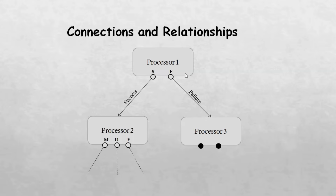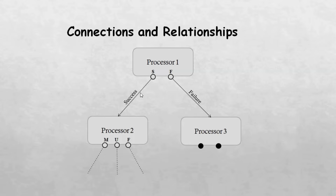Let's understand this with an example. Suppose processor 1 is trying to replace special characters from the input file. While doing so, processor 1 can either be successful or it may fail — the outcome can be success or failure. In both cases, we have to tell NiFi what actions should be taken. If we want processor 2 to run once processor 1 is successful, we need to link these two processors for the success event. This link is called a connection, and the success event becomes their relationship. Similarly, we need to add a connection for the failure relationship. Based on the kind of activity your processor is doing, there can be different kinds of outcomes. For most processors, the outcome can be success or failure. But there are processors like EvaluateJsonPath where the outcome can be matched, unmatched, etc.